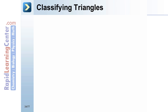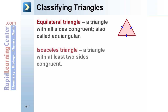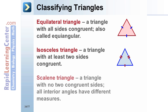Classifying triangles: an equilateral triangle is a triangle with all sides congruent, and it is also equiangular. An isosceles triangle is a triangle with at least two sides congruent. A scalene triangle is a triangle with no two congruent sides; in a scalene triangle, all interior angles have different measures.